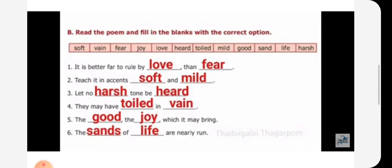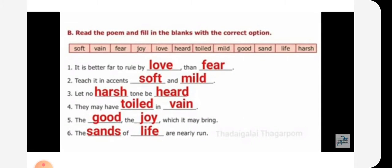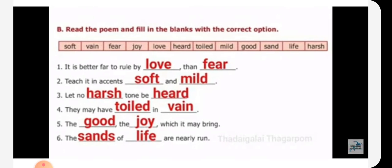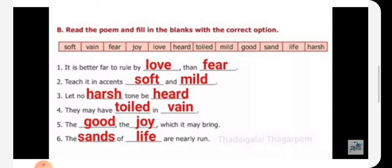Read the poem and fill in the blanks with the correct option. Some of the options they have given, we have to fill for the following questions. It is better to rule by love than fear. Teach it in accents soft and mild. Let no harsh tone be heard. They may have toiled in vain. The good, the joy which it may bring. The sands of life are nearly run.